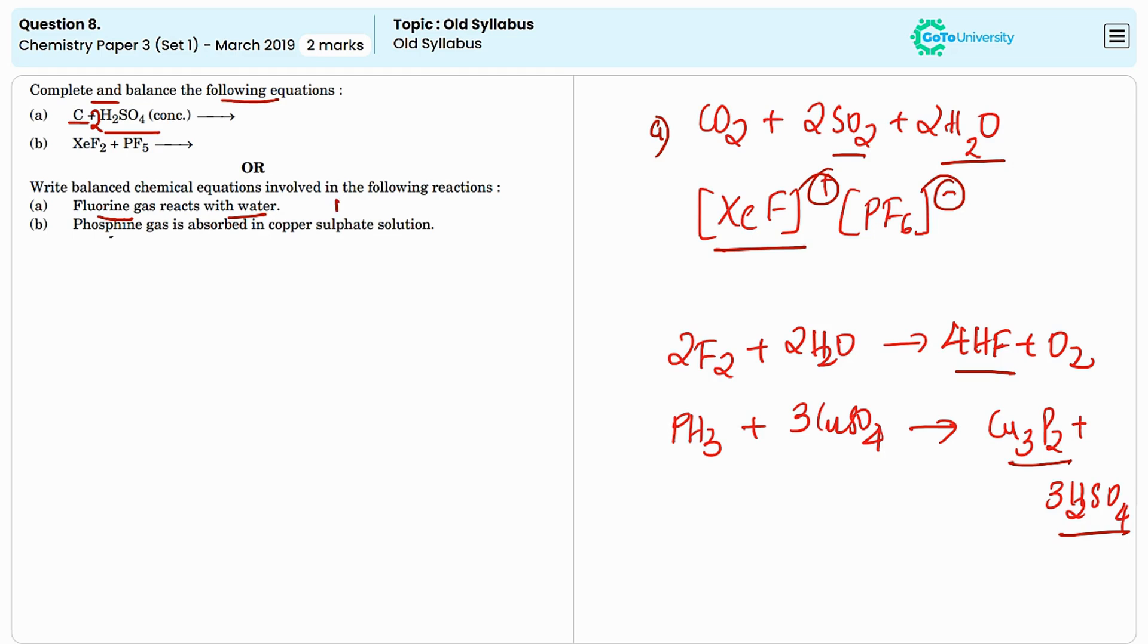For writing the first equation you will get one mark, and for the second one you will get another mark. So the total marks will be 2.